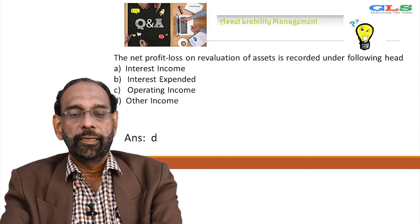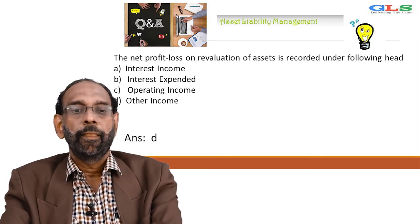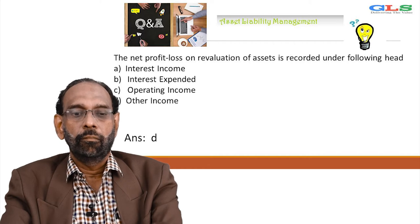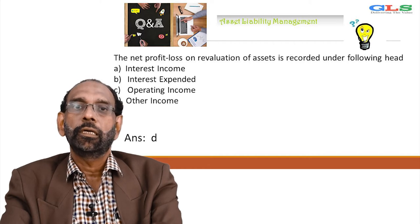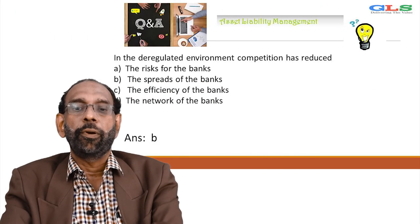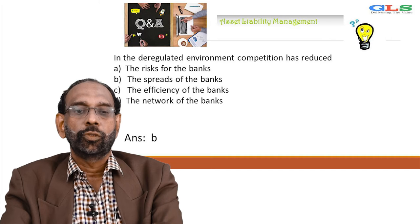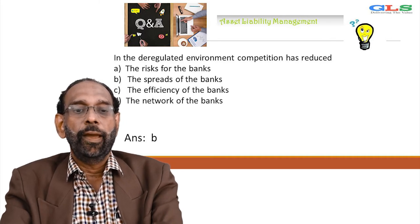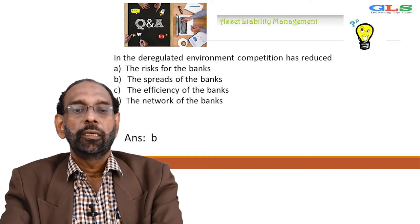The net profit or loss on revaluation of assets is recorded under the following head: interest income, interest expended, operating income, or other income. It is always other income, choice D. In the deregulated environment, competition has reduced — A: the risk for banks, B: spread of the banks, C: the efficiency of the banks, D: the network of the banks. Answer is B, the spread of the banks.